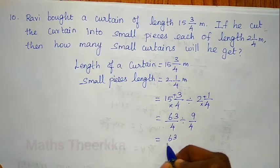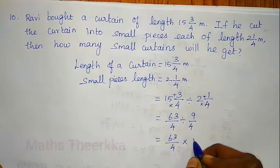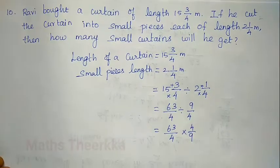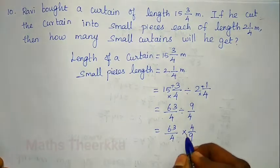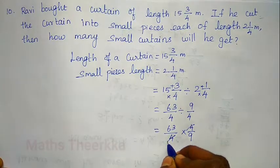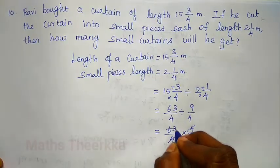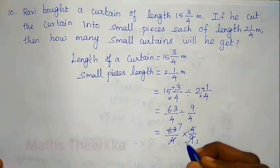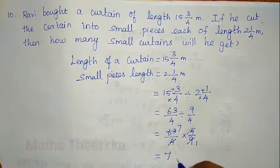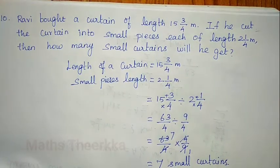63 by 4 divided by 9 by 4. We multiply by the reciprocal, so 63 by 4 times 4 by 9. The 4s cancel. Then 63 divided by 9: 7 times 9 are 63. So there are 7 small curtains.